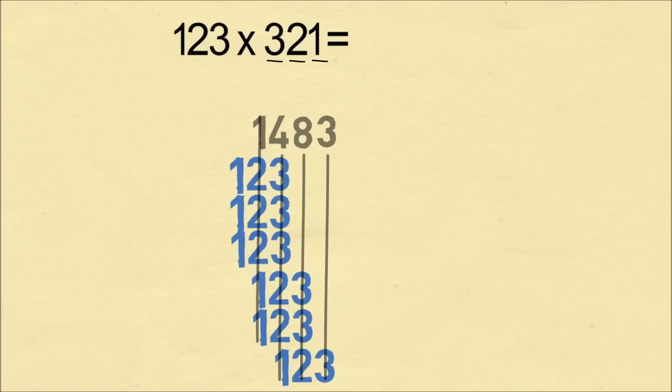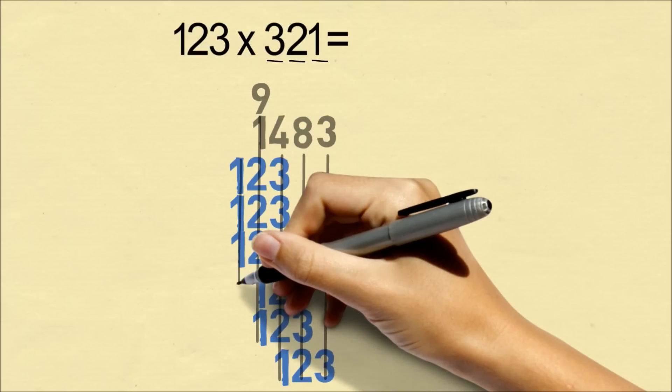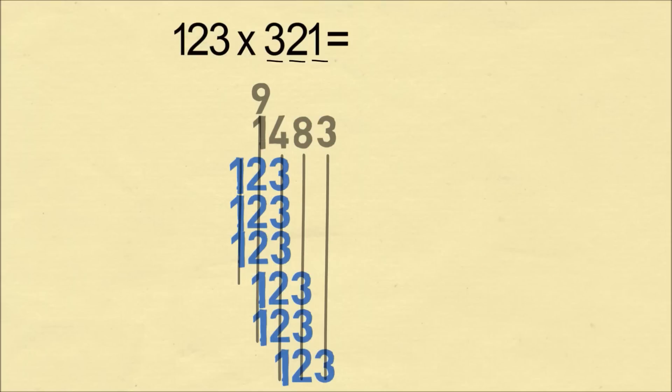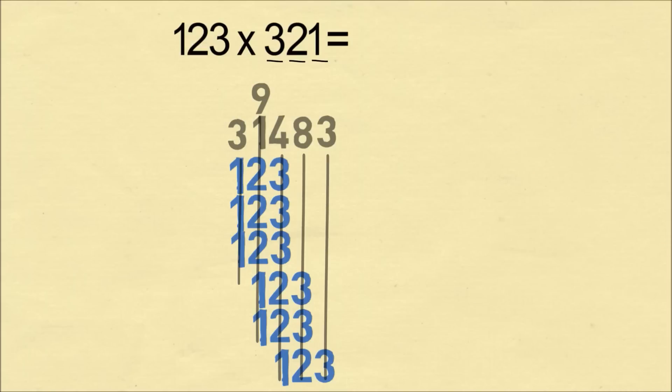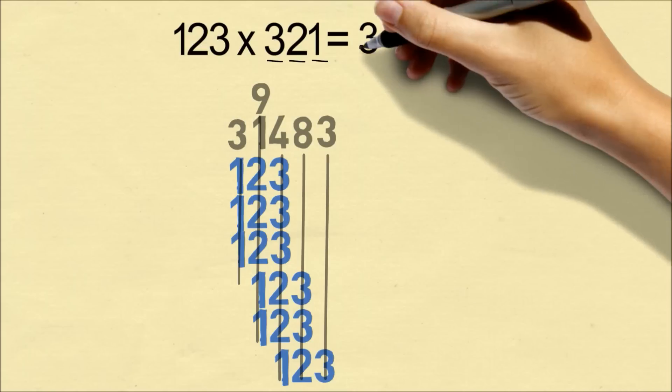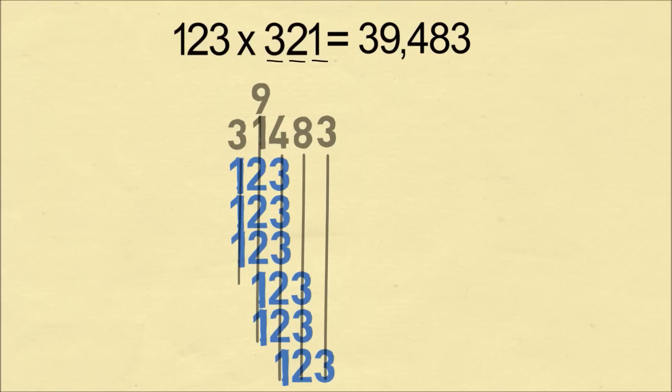So we have three 1s and three 2s, which all together make 9. And our final column is going to be three 1s, which is 3. So we have 39483, and that's our answer. Our answer is 39,483.